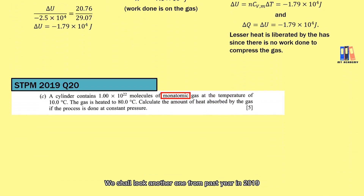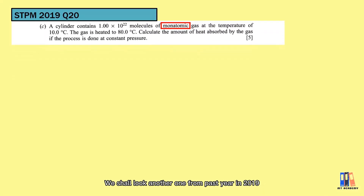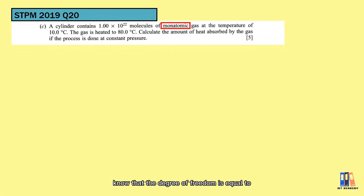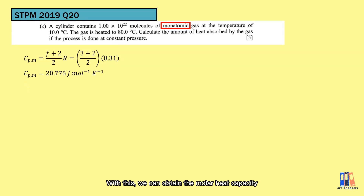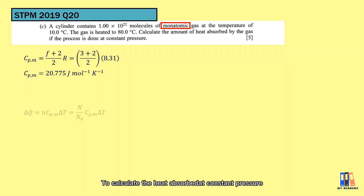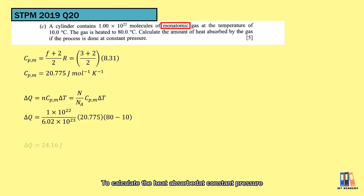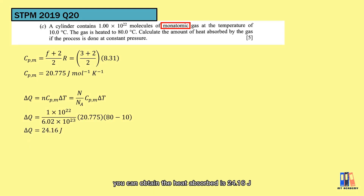Let's look at another question from STPM 2019. The question mentions a monoatomic gas. You should know that the degree of freedom F = 3 for monoatomic molecules. With this, we can obtain the molar heat capacity: C_PM = 20.775 J per mole per Kelvin. To calculate the heat released at constant pressure, apply the formula nC_PM ΔT. The heat released is 24.16 J.